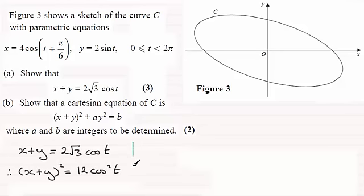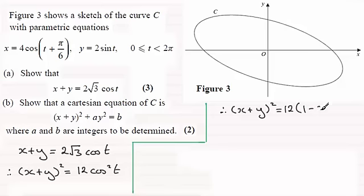Now all we need to do is pick up on the fact that cos²(t) = 1 - sin²(t) and substitute this in, that y = 2sin(t). Therefore what we've got is (x + y)² = 12(1 - sin²(t)).